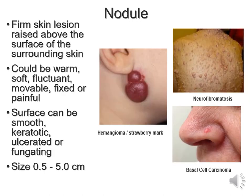A nodule is a firm skin lesion raised above the surface of the surrounding skin. It can be warm, soft, fluctuant, moveable, fixed, or painful. The surface can be smooth or rough — keratotic — and it can be ulcerated or fungating, producing fluid, depending on what's caused it. Size typically varies from 0.5cm to about 5cm. Examples include a hemangioma, sometimes referred to as a strawberry birthmark, neurofibromatosis which is a terrible and very disfiguring disease, or basal cell carcinoma.